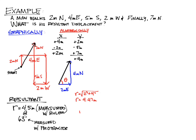We also need to find the angle, which requires trigonometry — sines, cosines, and tangents. For this angle, we use the tangent because we know the opposite side is 4 meters and the adjacent side is 2 meters. To get the angle, we use the arctangent — tan⁻¹ of 4 over 2. That angle comes out to be 63.4 degrees.